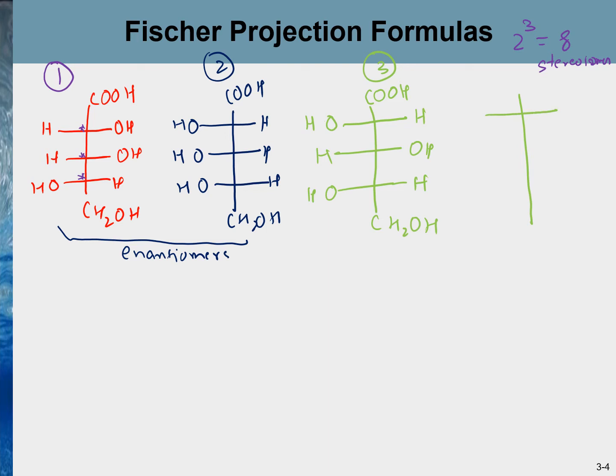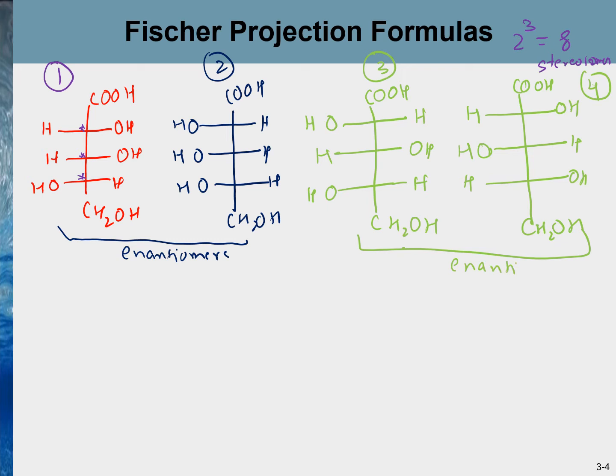Drawing the mirror image of number three gives the fourth stereoisomer. Number three and number four are a pair of enantiomers, but they are diastereomers relative to each other. This molecule does not have any plane of symmetry, therefore meso compounds do not exist in this case, and we will have exactly eight stereoisomers.